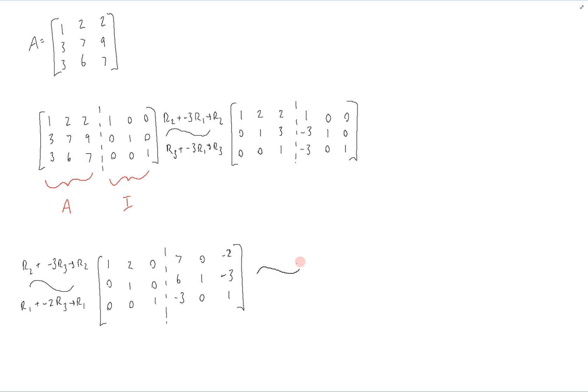And finally, to get rid of the two on top of this one, we're going to add negative two times row two to row one. And the result is this.